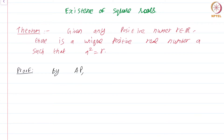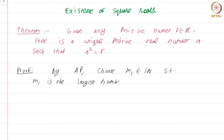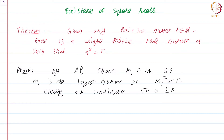By the Archimedean property, choose m1 in the natural numbers such that m1 squared is less than r. There will always be a largest natural number such that m1 squared is less than r, and m1+1 squared is greater than or equal to r. Clearly, our candidate square root of r lies in the interval [m1, m1+1], because by hypothesis (m1+1)² is greater than or equal to r.